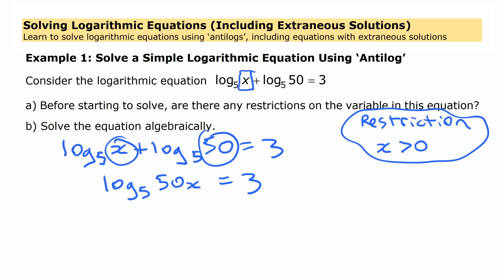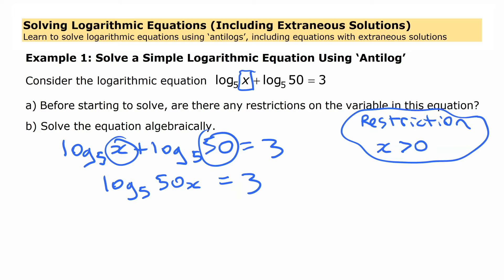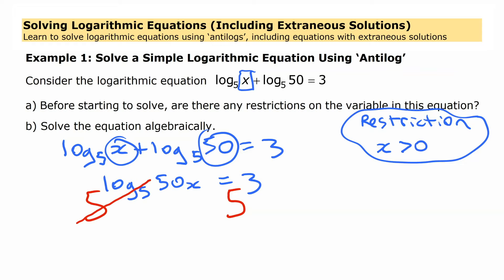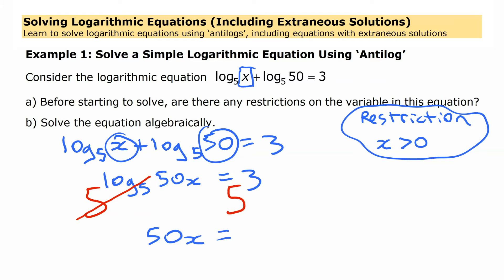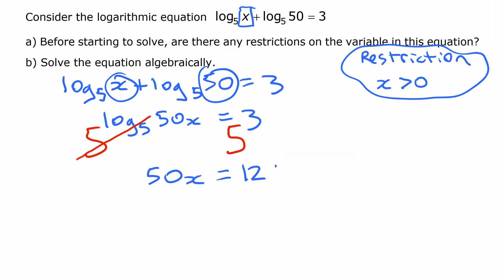Now that we have a single term on each side — three on this side and log of 50x on that side — we can do the anti-log of each side. We undo this log base 5 by taking the anti-log base 5, which is essentially making the expression on each side the exponent on a 5. These two cancel each other — 5 to the power of log base 5 — so we just have 50x on one side, and 5 to the 3, which is 125, on the other.